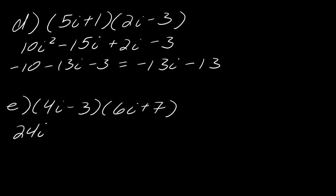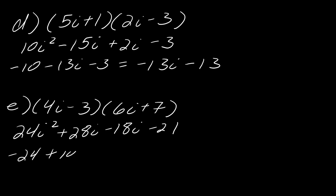Moving on to the next one: this is going to be 24i squared plus 28i minus 18i minus 21. This becomes negative 24 plus 10i minus 21, so my final answer here is 10i minus 45. And that's all you can do for that one.